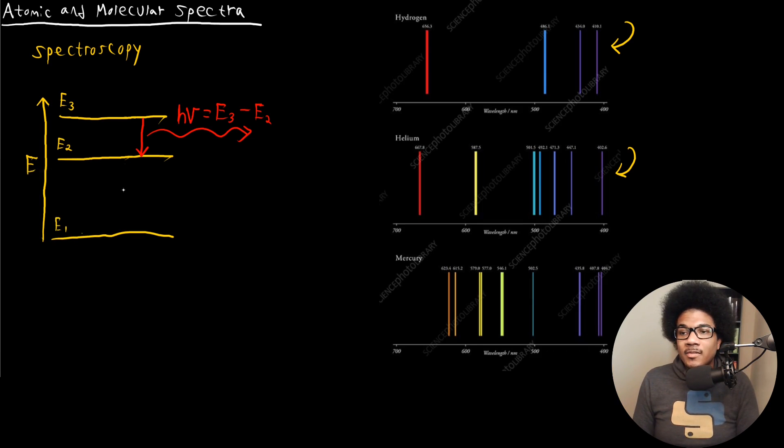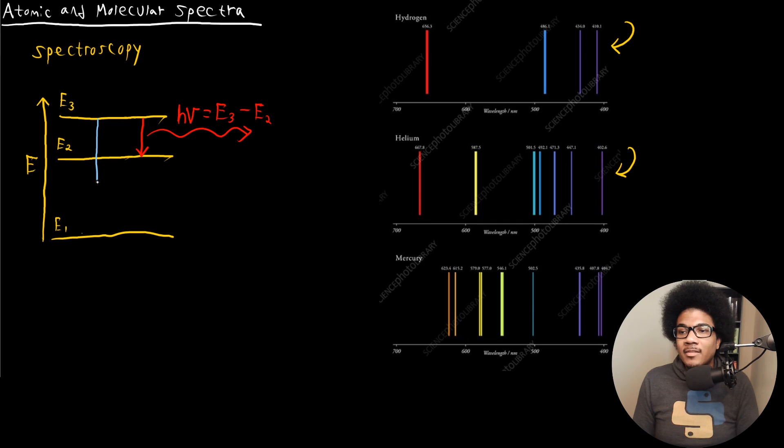Same thing for, let's say we have a relaxation from E3 down to E1. This is going to be a higher energy relaxation since there's a bigger gap between E3 and E1. So you're going to get a higher energy photon, which means it's going to have a greater frequency. But it will still be H nu, just with a greater frequency, and it will be equal to E3 minus E1.